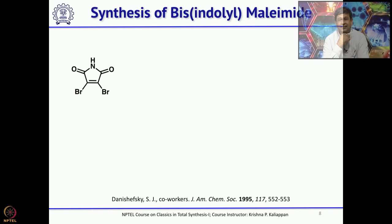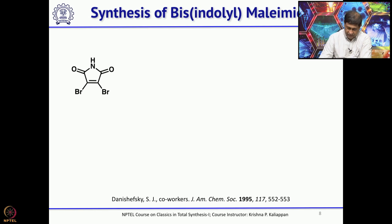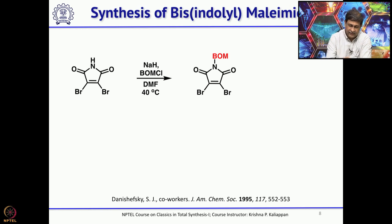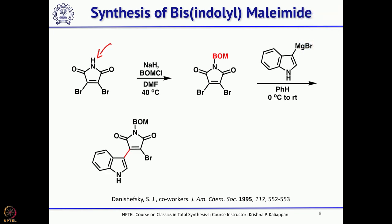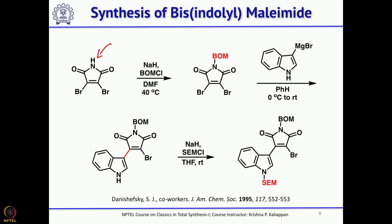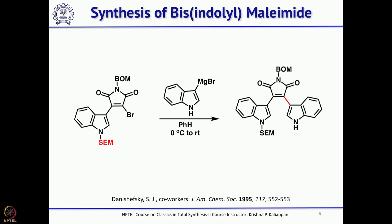Danishefsky started his synthesis with dibromomaleimide and protected the nitrogen as N-BOM by treating with benzoyloxymethyl chloride and base. Then he did two successive 1,4-additions followed by elimination — first with 3-indolylmagnesium bromide. The addition took place in a 1,4 fashion and the bromide left. The NH was protected as SEM using sodium hydride and SEM chloride. A second 1,4-addition and elimination with another indole-3-magnesium bromide gave the two indole moieties attached to the maleimide.